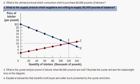Next, Part C asks: what is the supply price at which suppliers are willing to supply 80,000 pounds of lobsters? Given 80,000 pounds of lobster, what's the price that suppliers will be induced to supply exactly that amount? The answer is $8. At $8 per pound of lobster, suppliers are willing to supply 80,000 pounds of lobsters.